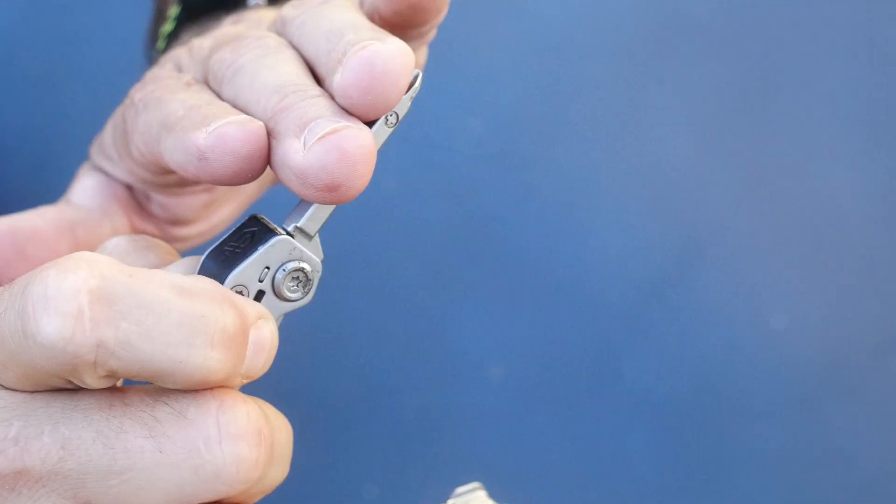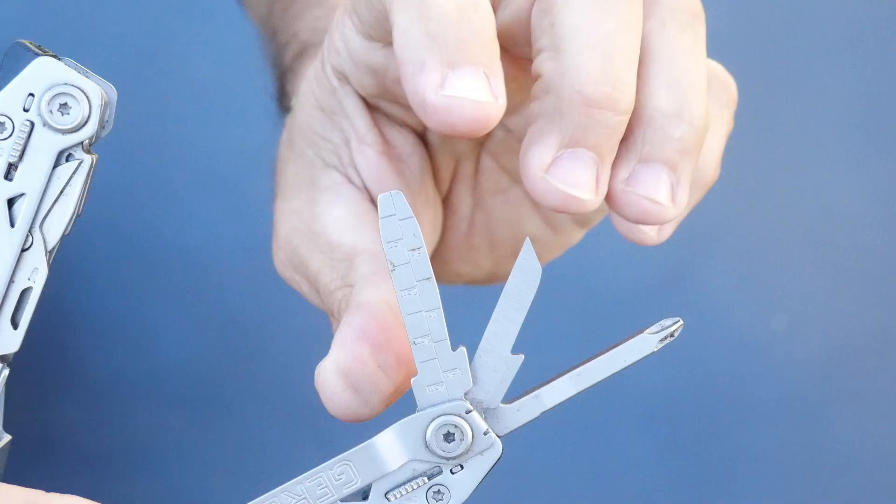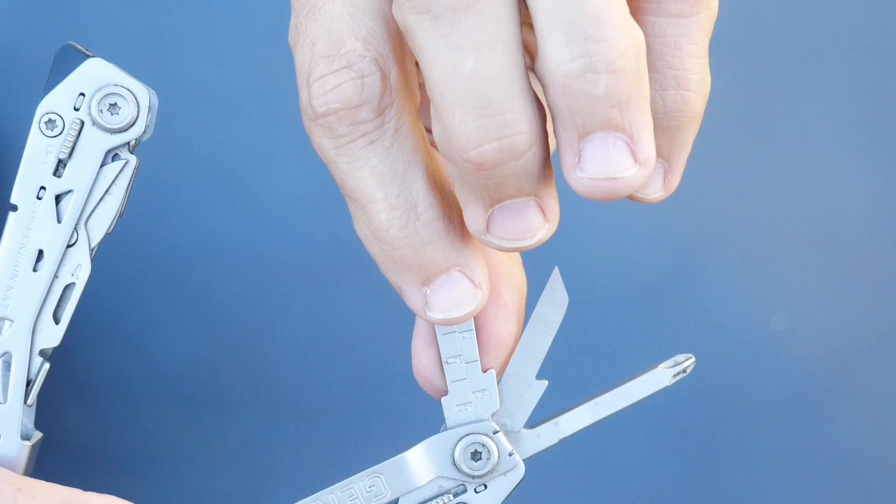The tools, number one, you've got a Phillips head screwdriver, or what they're calling a crossway. Inside of here, you've got an awl. And then also in here, you've got medium flathead. There's a ruler on this back side. On that side is a file.